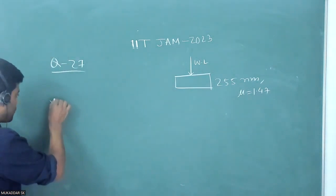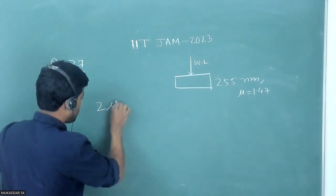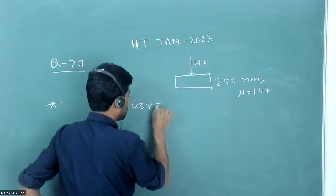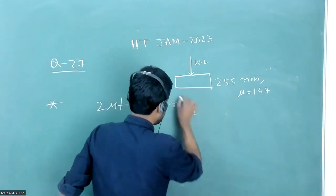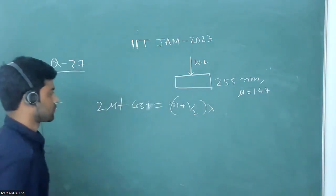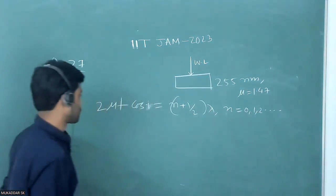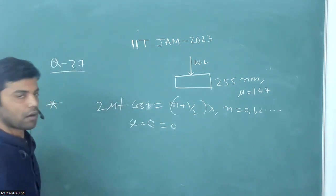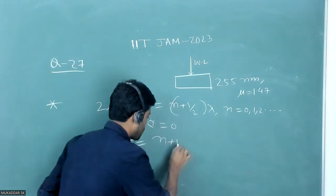For constructive interference, the color will be dominated for which we get constructive interference. The condition for constructive interference in thin film is 2μT cos R = (n + 1/2)λ, where n can take values 0, 1, 2, and so on. For normal incidence, the angle will be 0, so cos R will be 1. We get 2μT = (n + 1/2)λ.